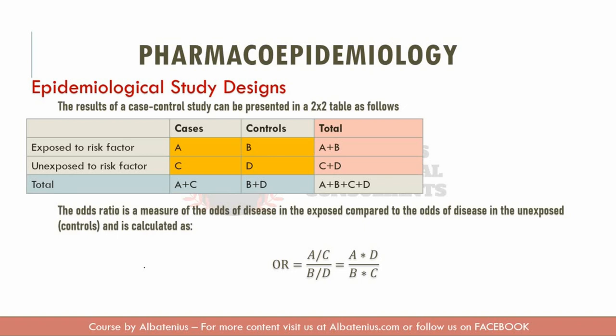Case series may refer to the study of a single patient, sometimes called a case report, or it might be a small group of patients, which is technically the proper term for case series. If we're studying only one single patient it's called a case report, but a lot of people confuse these two terms and call both of them case series.